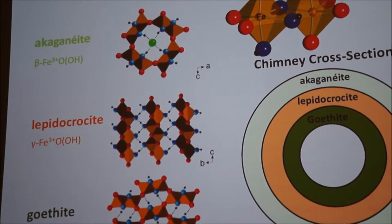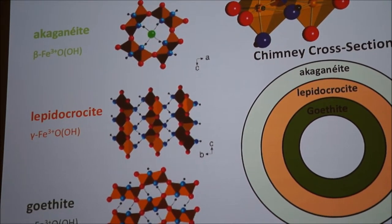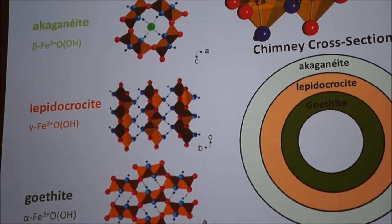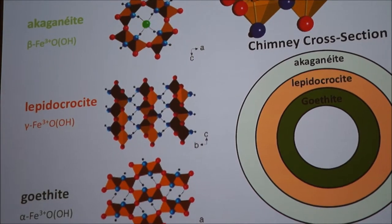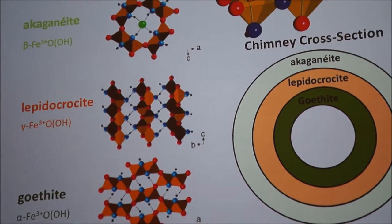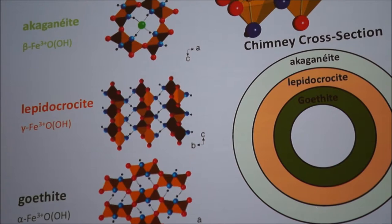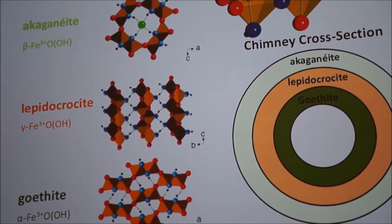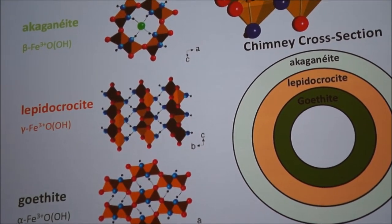Studies have shown that chloride ions can assist the transformation of ferrous iron oxyhydroxide, a different mineral called green rust, into these ferric iron oxyhydroxides. Chloride causes akaganeite to form. In lower chloride concentrations, lepidocrocite forms, and then in even lower concentrations of chloride, goethite forms. I think that's what's happening in our chimney.